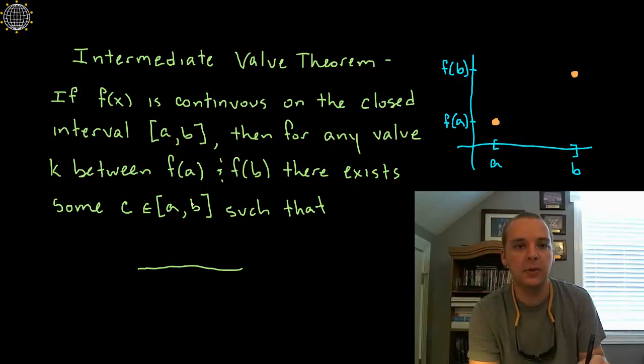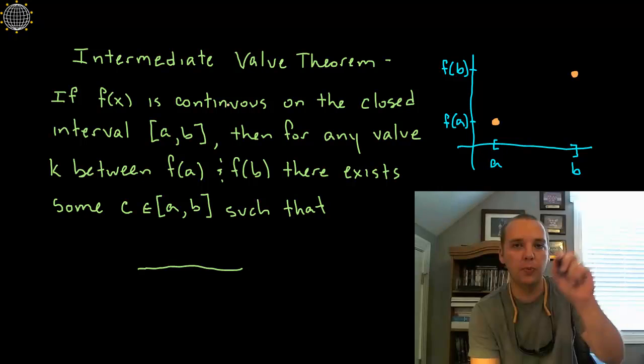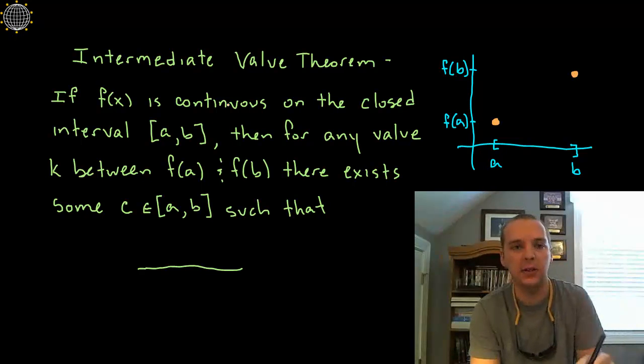Alright, so let's dissect this a bit and then we will get to the punchline. So we have to have a continuous function with no breaks in it, no jumps, no asymptotes or anything like that.